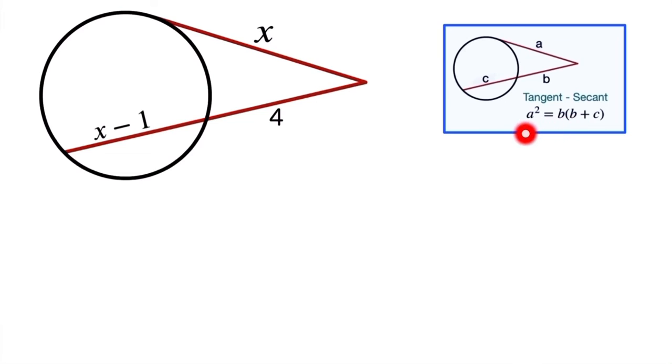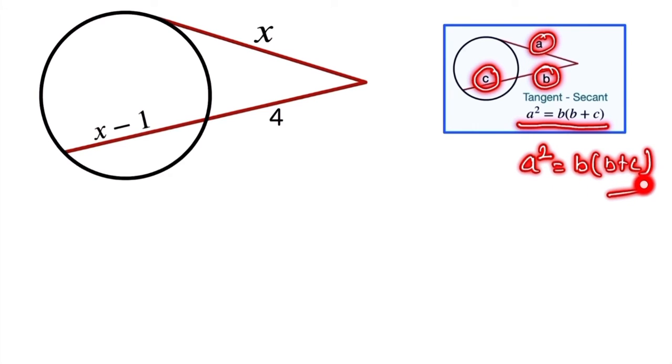The relationship between tangent and secant uses these variables: a is x, b is 4, and c is x minus 1. The relation is a² equals b times (b plus c).